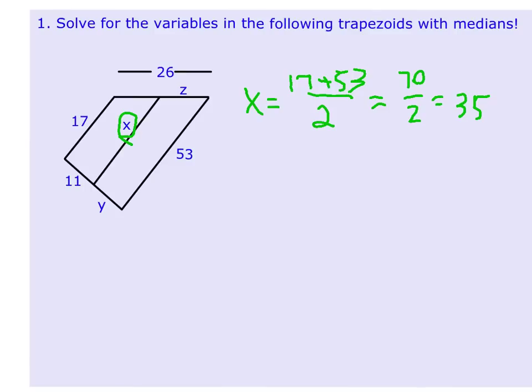Next, I'm going to go to y, and we know that because the median is the midpoint of the leg, then we know that y has to equal 11. And over on the other side, to find z, because again the median is at the midpoint of the leg, I know that these two pieces have to be congruent. And since it tells us that the whole thing is 26, then z has to be half of that, so z would be 13.